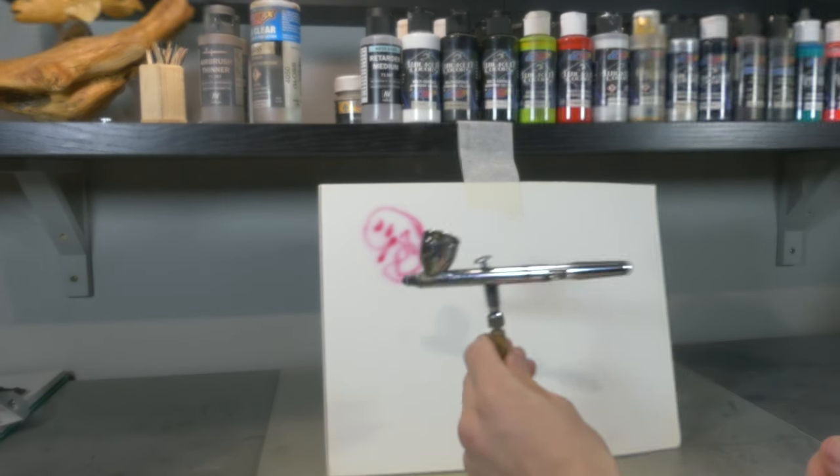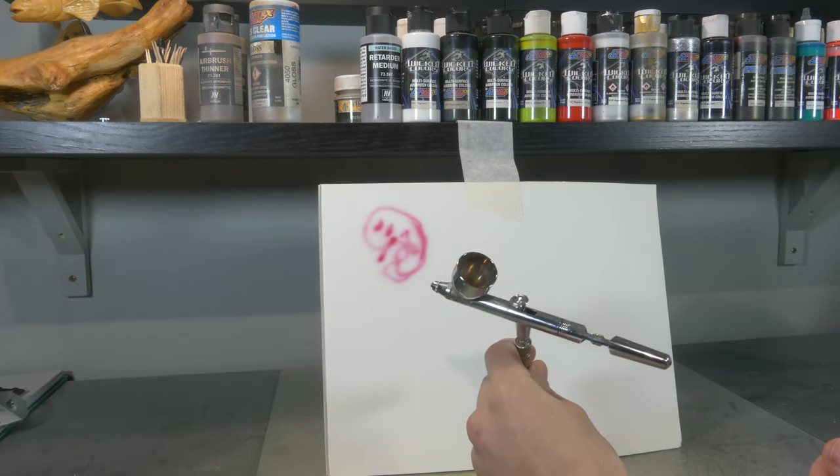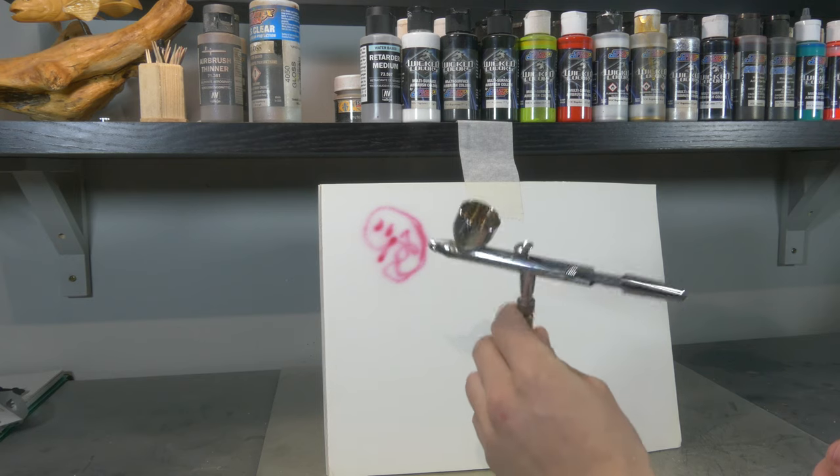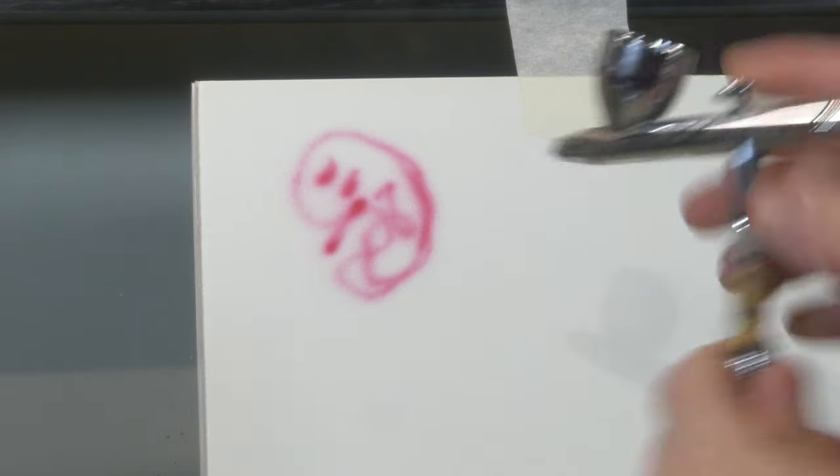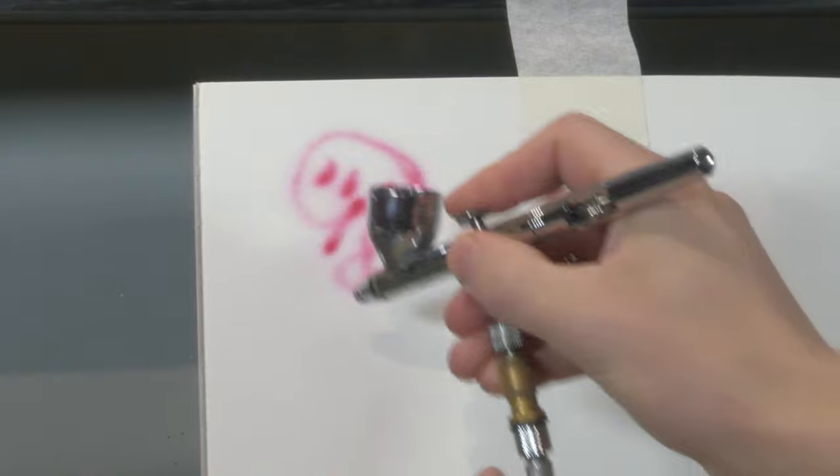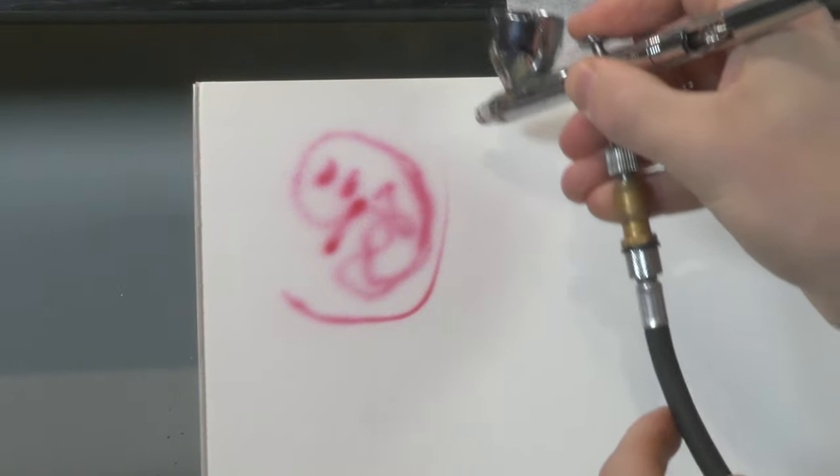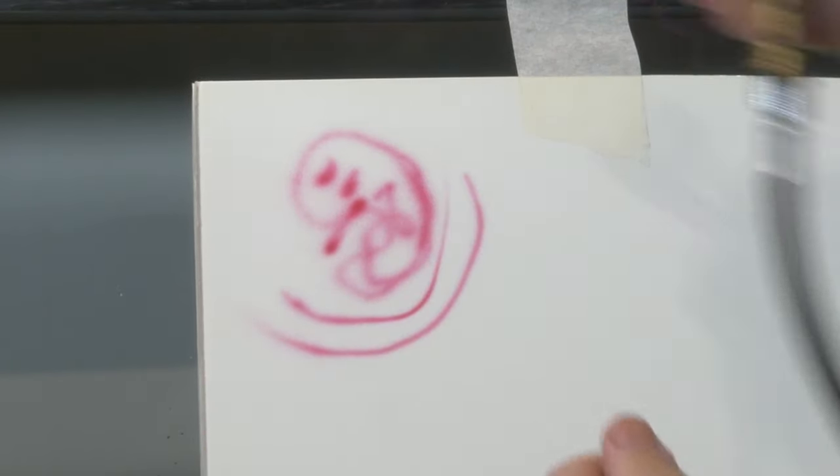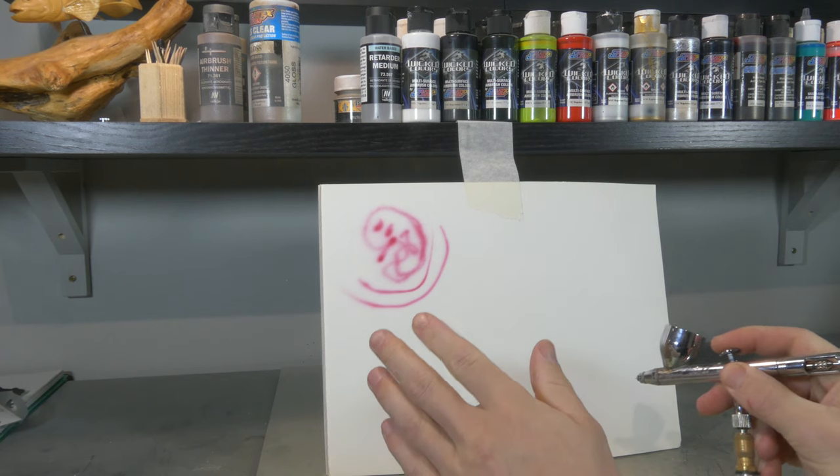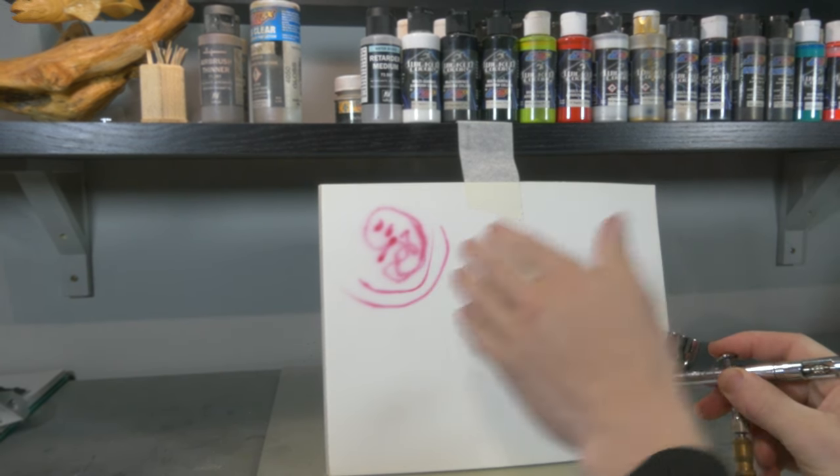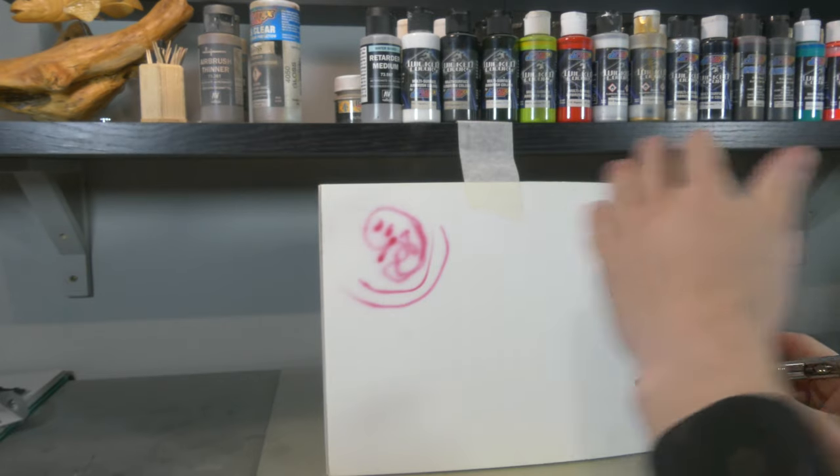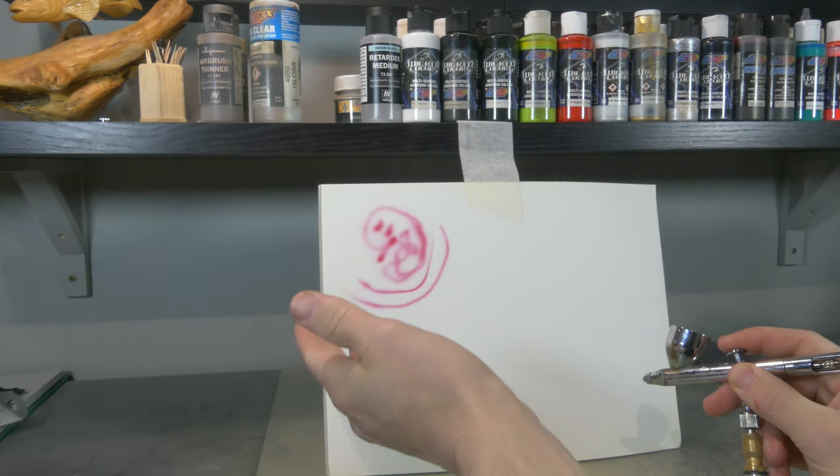But we can use Createx paint straight from the bottle. You just gotta up your air pressure. So this is about 30 psi now. See the difference? It's the same paint but now I got full control.